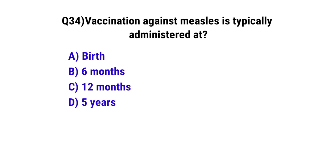Question number 34. Vaccination against measles is typically administered at. The correct option is C: 12 months.